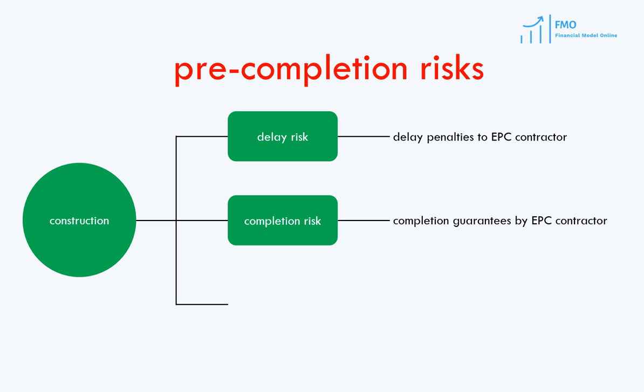Another important risk at construction is completion risk — will the project be built at all? Again, this is dealt with through an EPC contract, whereby the EPC contractor provides a completion guarantee, typically backed by an independent bank. Finally, the performance of the project once construction is complete is also a risk that EPC is responsible for. The project has to perform at least as well as specified in the EPC contract. If performance is worse than the specifications, the project will not be able to produce planned output and generate planned cash flows, negatively affecting its ability to repay debt and pay dividends. Therefore, it is customary to have performance guarantees in the EPC contract.